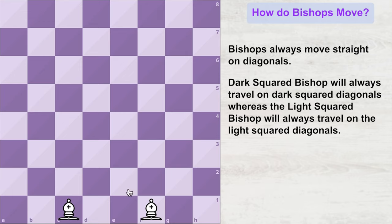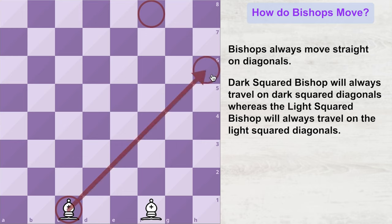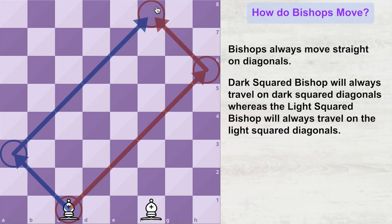To better understand the movement of a bishop, let's see an example. Let's say I want to get this bishop to a particular square. The bishop can first come to one square and then in the second turn come to the destination square. An alternative route for this bishop would be to first come to a different intermediate square and then travel to the destination square.